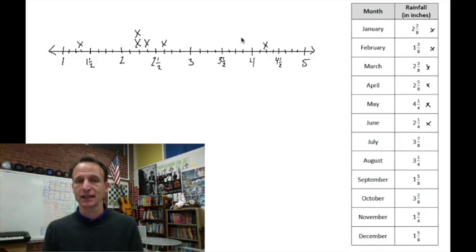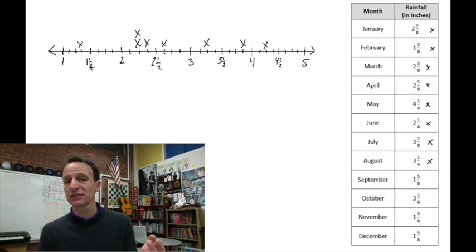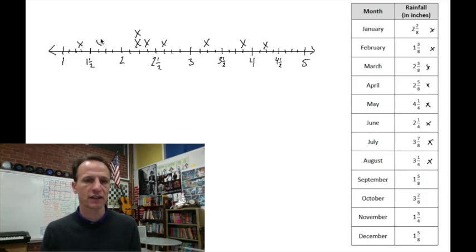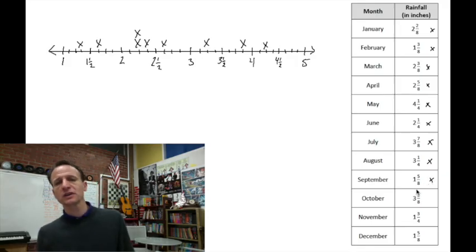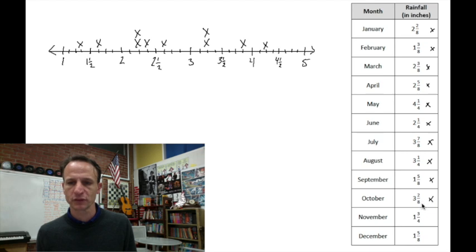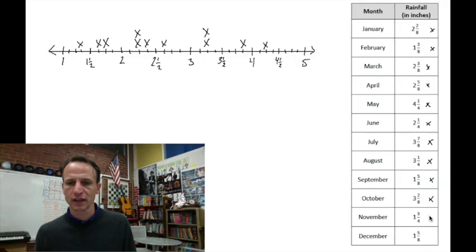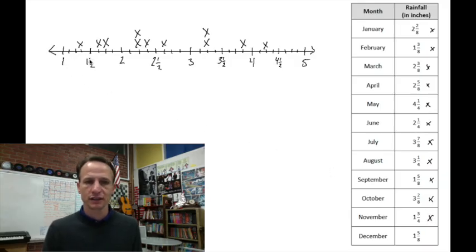Three and seven eighths: hop back one eighth from four — that's three and seven eighths. Three and one fourth is the midpoint between three and three and a half — we've done so much fractions this is pretty familiar. One and five eighths: one and a half is one and four eighths, so one and five eighths is next door. Three and two eighths equals three and one fourth — I can count from three: one eighth, two eighths — same place, so the X goes on top. One and three fourths is the midpoint between one and a half and two. And lastly, one and five eighths goes right next to one and a half. We've created our line plot.